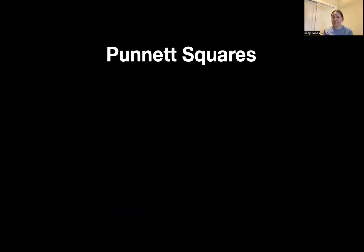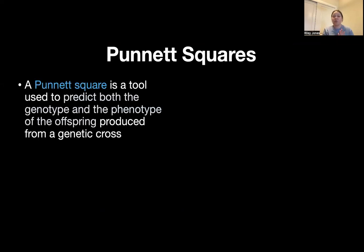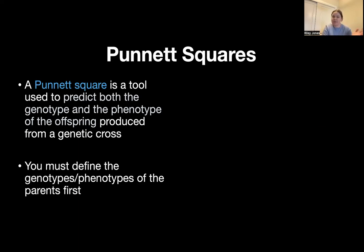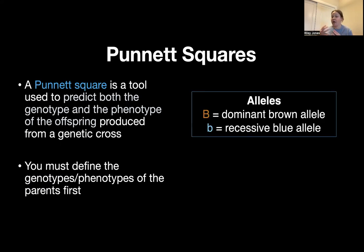How do we predict these different phenotypes? We have what are called Punnett squares. A Punnett square is basically a tool that you can use to predict both the genotype and the phenotype of the offspring produced from a genetic cross. We have to define the genotypes or phenotypes of the parents first, and that's how we are able to predict the offspring. If we know the genotypes and the phenotypes of the parents, we can predict what the offspring might have when it comes to phenotypes and genotypes.